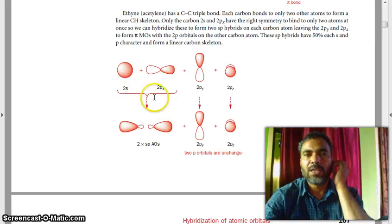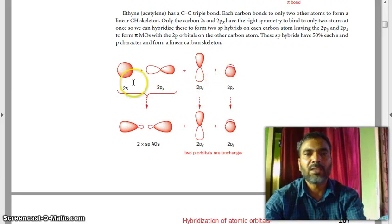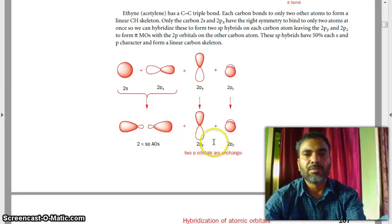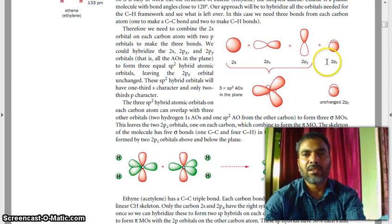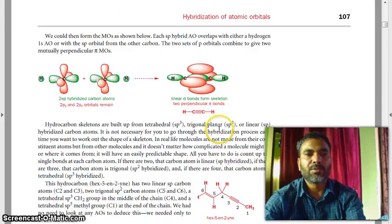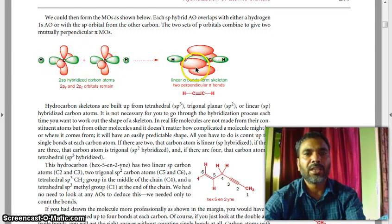Now you see 2S, 2Px, 2Py, 2Pz. Leave this one. These two are combined forming this two. So 2Py, 2Pz, these two P orbitals are unchanged. Here one is unchanged. So two SP hybridized orbital carbon atoms. 2Py and 2Pz orbitals remain. This one, the green one, and that one remained. You see, linear sigma bonds form the skeleton to perpendicular pi bonds, one pi bond perpendicular to another. This is the example of SP.